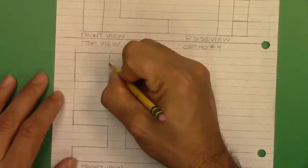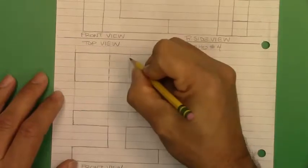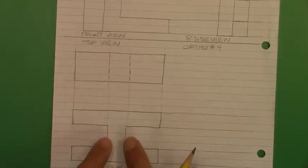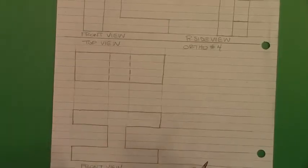We're going to have a hidden line here. We're going to have a hidden line here. Okay, that's referencing this opening that we can't see from the top view.